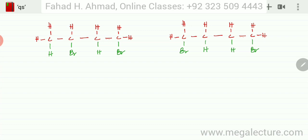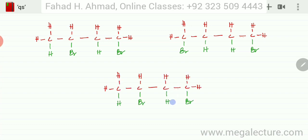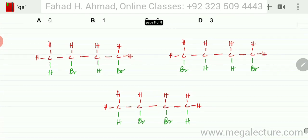The third possible isomer is where this H and Br switch position. The Br could be bonded to this carbon atom and the H to the other carbon atom, giving us the third version of the product. These are the only possible structural isomers when two HBr molecules react with 1,3-butadiene.